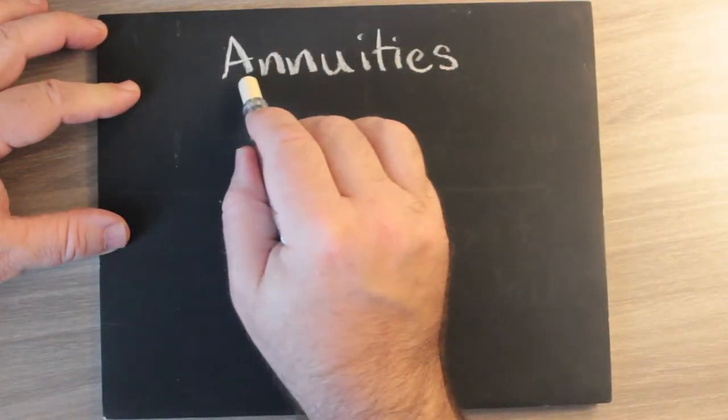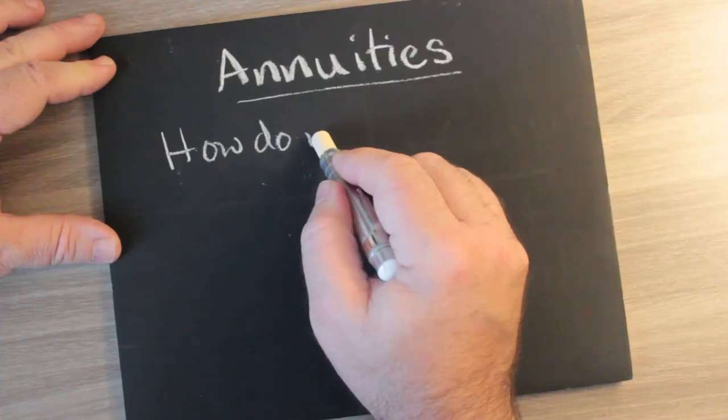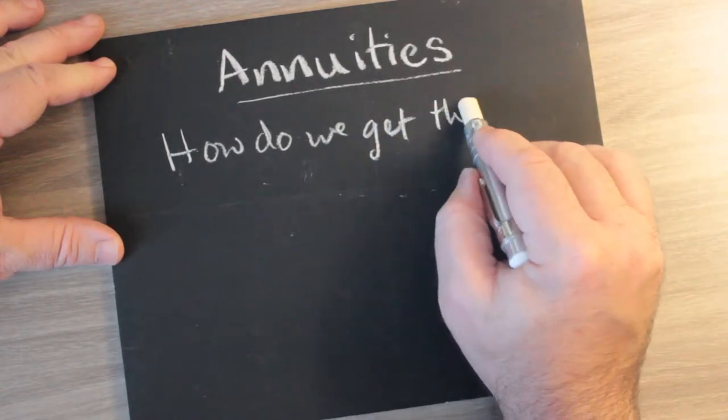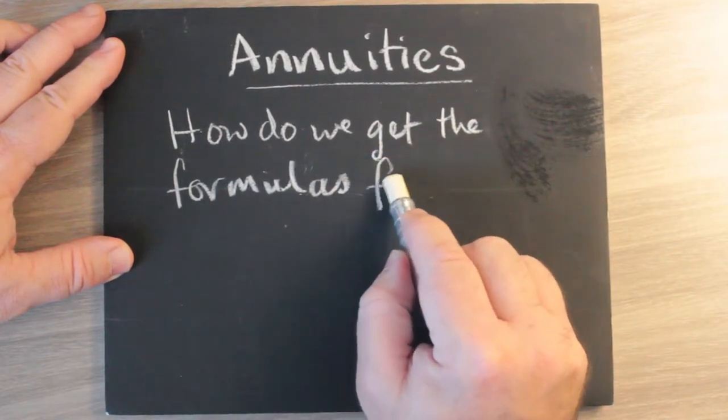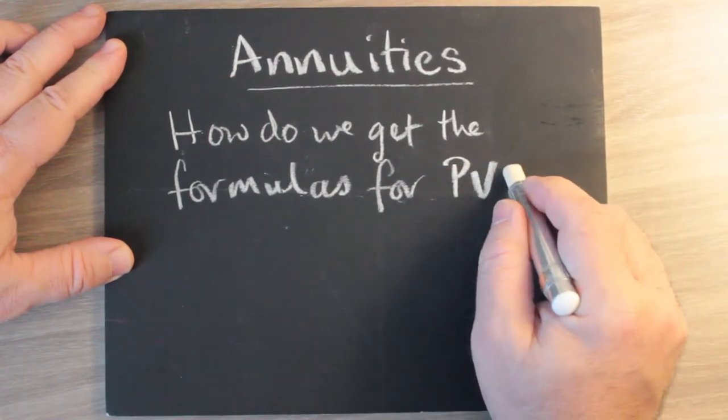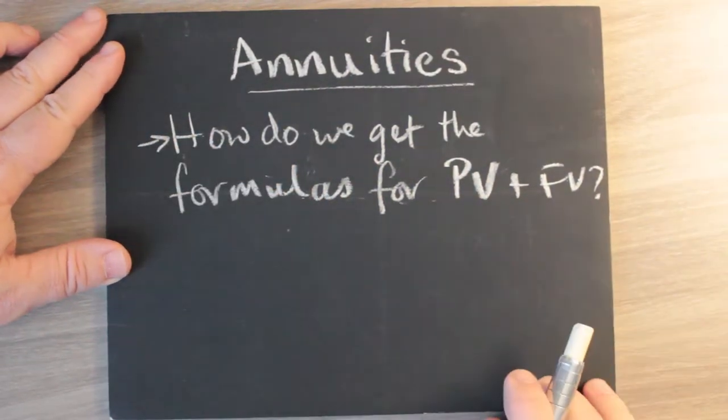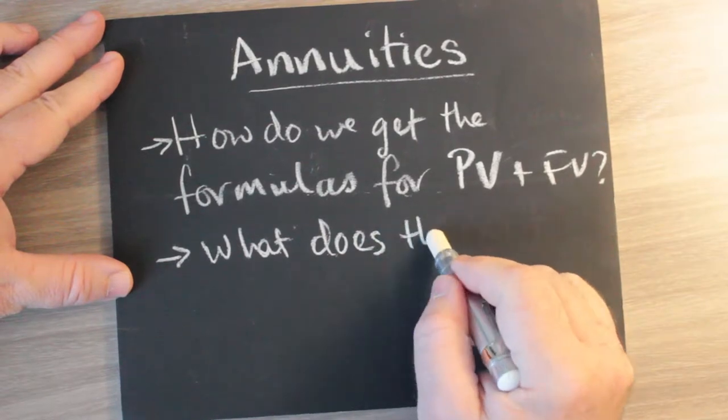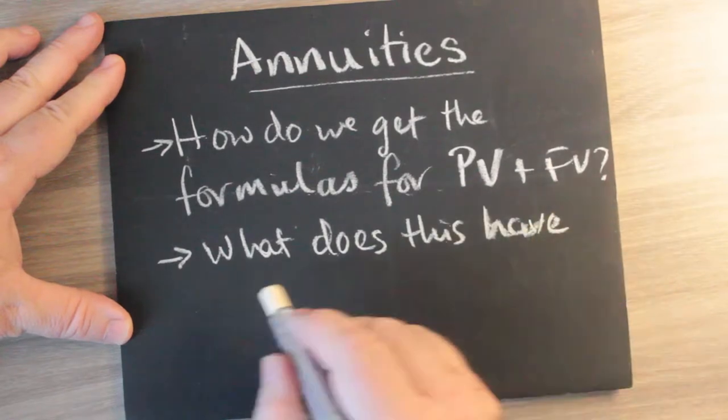This video came about because I wanted to show a way to associate annuities such as future value with things like the timeline. It was difficult to do because in certain textbooks these things don't show up. I thought this would make it easier for anyone who wishes to understand where these seemingly magical formulas come from, because I don't like magical formulas any more than many of you do.